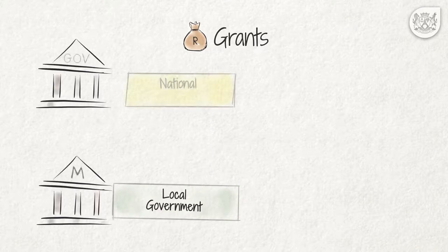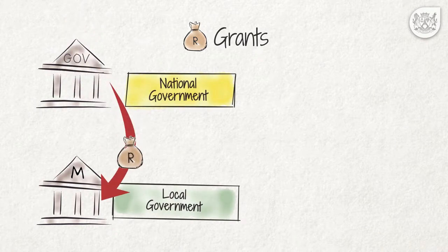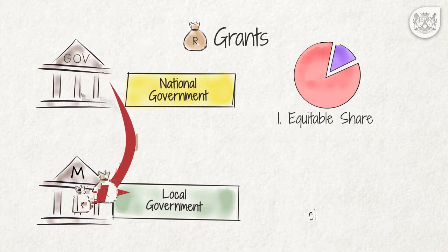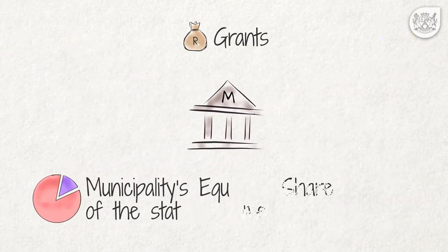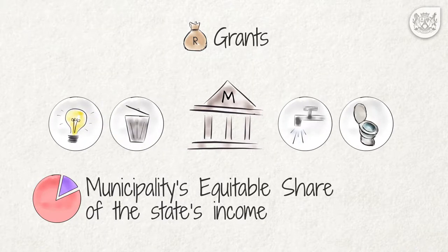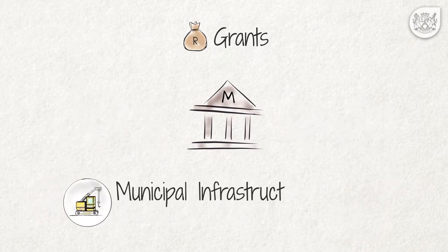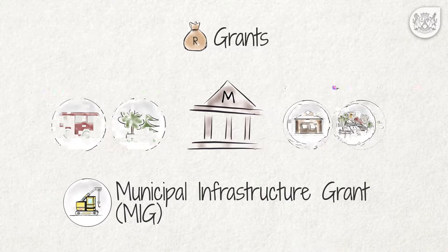Grants. All municipalities receive money in the form of grants from the taxes that the national government collects. One grant is the municipality's equitable share of the state's income from nationally collected taxes, and the other is the Municipal Infrastructure Grant. The municipality's equitable share is used to help pay for the cost of basic services for people whose income is below a certain threshold. The Municipal Infrastructure Grant, called MIG, is designed to help pay for the construction costs of basic infrastructure services that mainly benefit the poor.